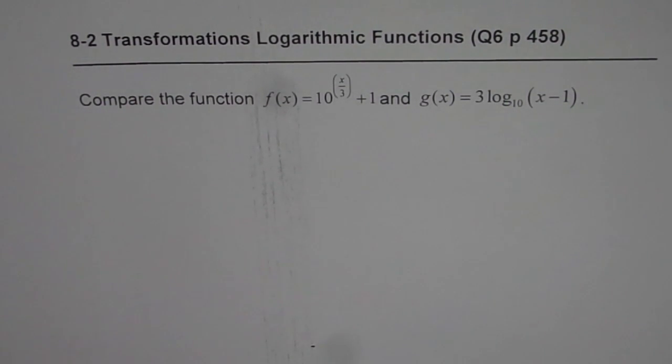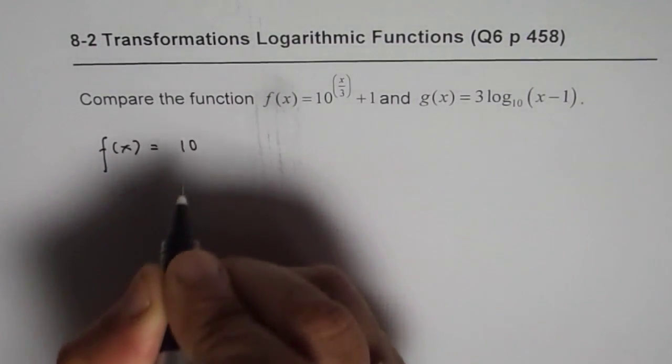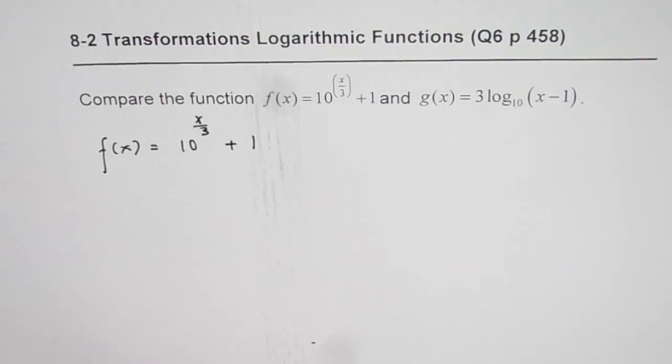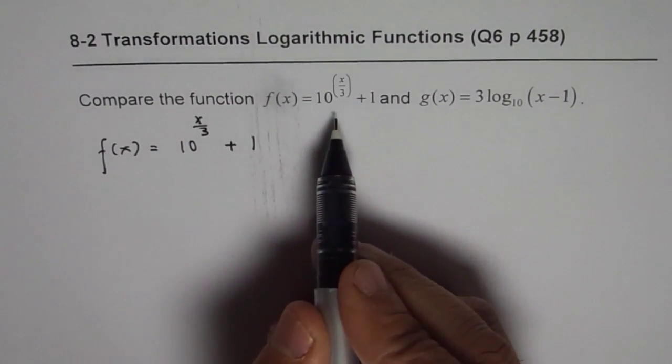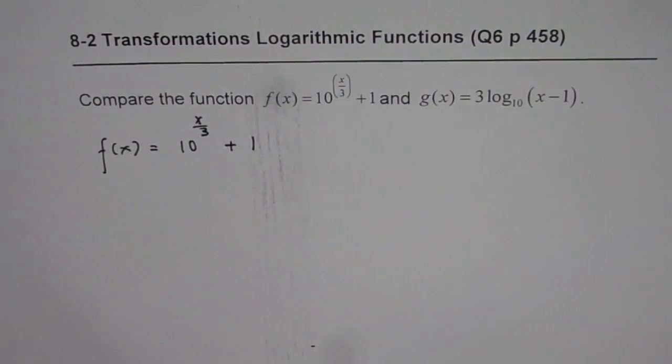Now what is the relation between these two functions? Let's consider f(x) = 10^(x/3) + 1. This is exponential form and that is a logarithmic form. So we know some way they are related by the inverse of a function.